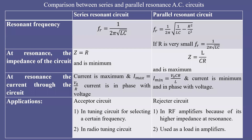In a series resonant circuit, there is a frequency at which you can find maximum current — the current becomes maximum at a particular frequency called the resonant frequency. But in a parallel resonant circuit, the impedance of the circuit becomes maximum at a particular frequency and the current becomes minimum. So at resonant frequency, the current becomes minimum in a parallel resonant circuit.